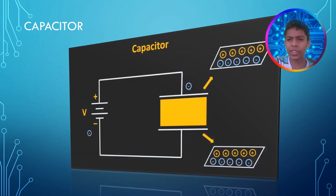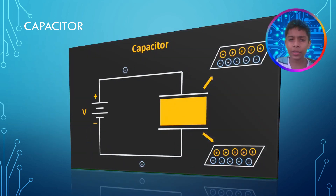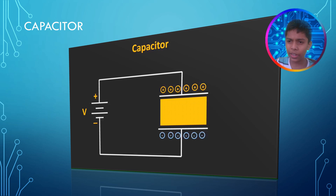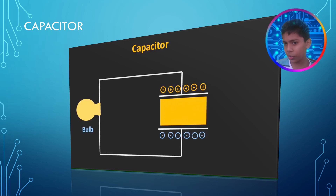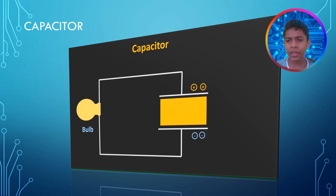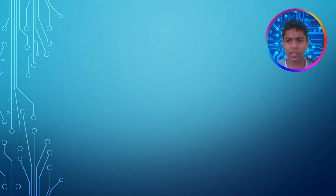When we charge the capacitor, it stores electrons and protons of the electricity. When we discharge it — meaning we use it — the electrons and protons come together and become neutral. When all the electrons and protons combine, we say the capacitor is discharged.